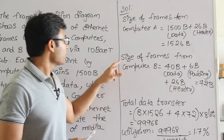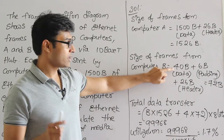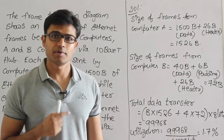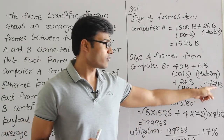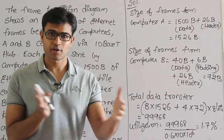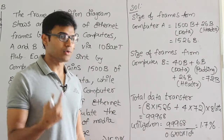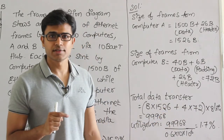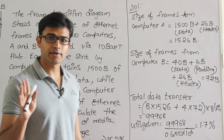The size of frames from computer B is 40 plus 6 plus 26 equals 72 bytes. Even though they only have 40 bytes to send, padding is required to meet the 46-byte minimum payload for collision detection. Now for total data transfer in bits: 8 frames from A to B gives 8 × 1526, plus 4 frames from B to A gives 4 × 72, multiplied by 8 to convert bytes to bits.